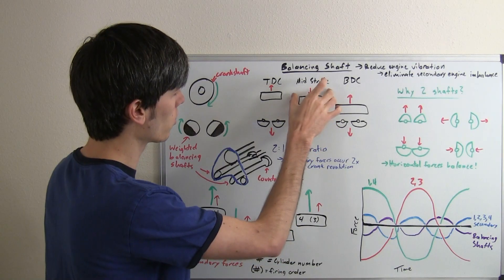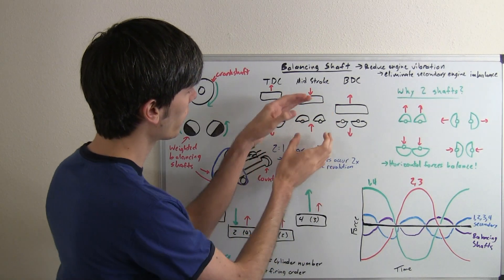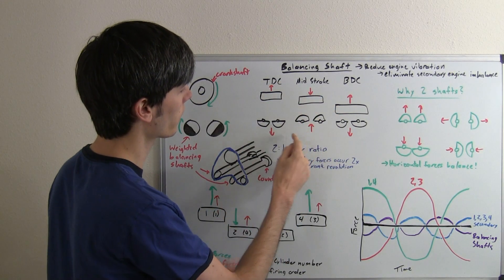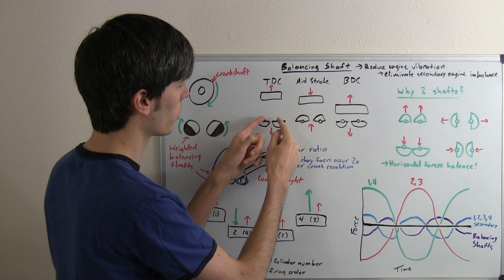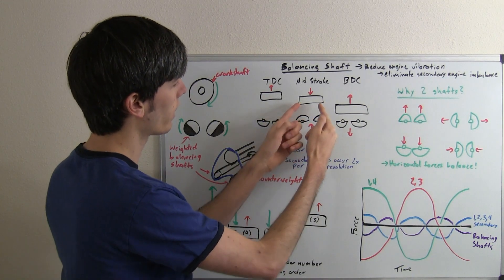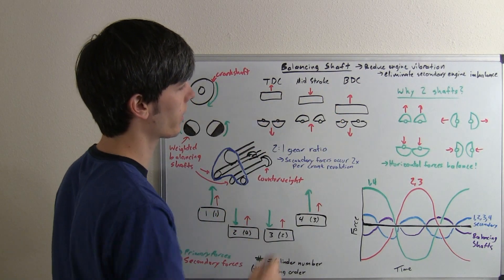At mid-stroke, once the crankshaft has turned 90 degrees, you're going to have the secondary force coming down. To counteract that, you'll have a 180-degree rotation from the balancing shafts, so they'll have a net force going up which will counteract that secondary force.